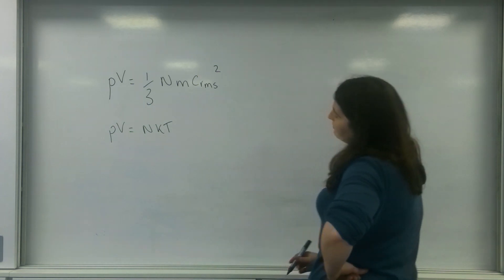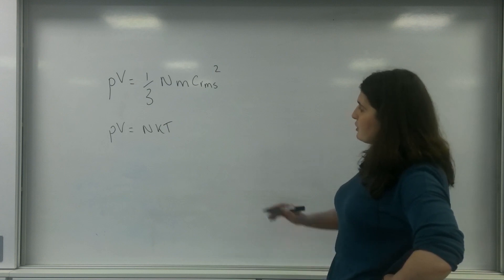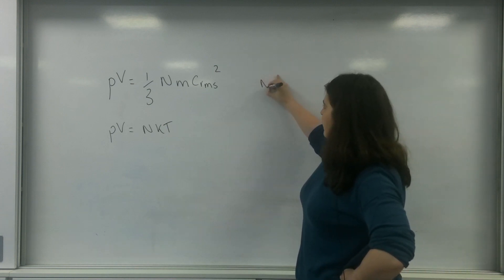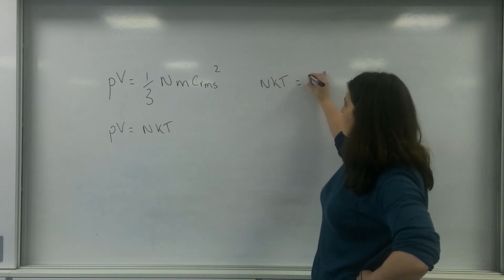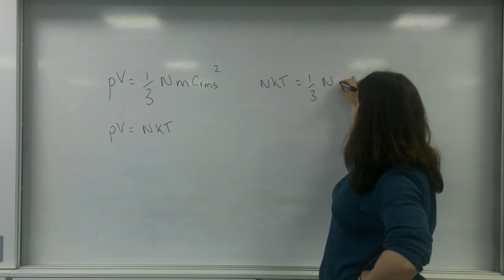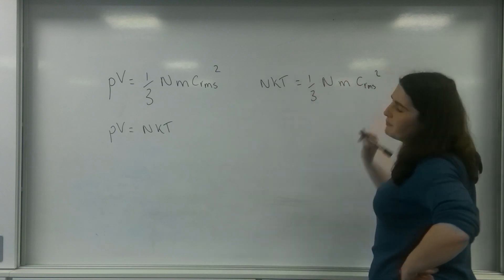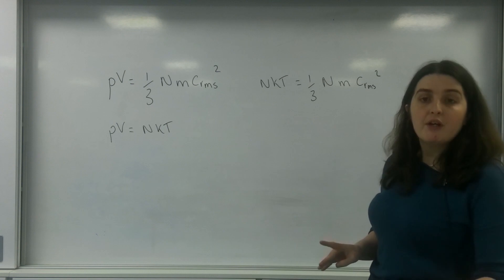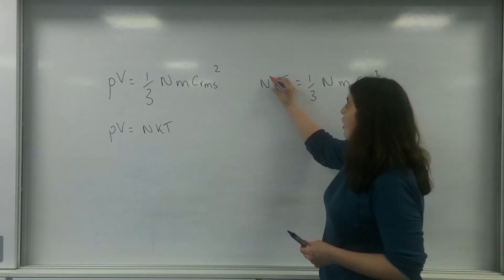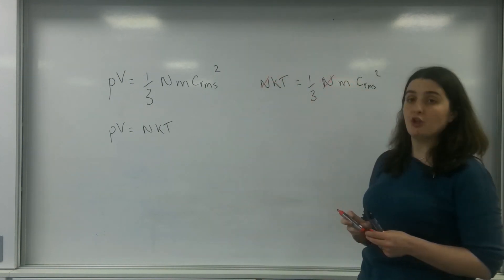So let's bring this about. What I'm going to do is make these two formulae equal to each other, so we're going to have nKT equals one-third nMC_RMS squared. And very quickly you can see that the n's cancel, so we are literally looking at one molecule.